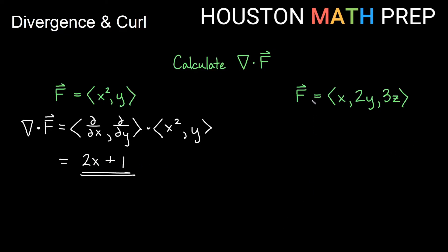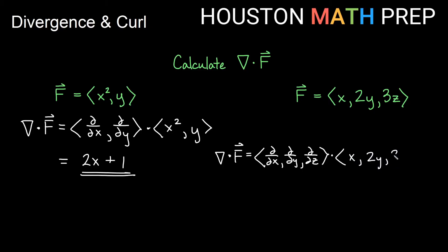For the three-dimensional vector field F = (x, 2y, 3z), del·F is (∂/∂x, ∂/∂y, ∂/∂z)·(x, 2y, 3z). The partial derivative of x with respect to x is 1, partial derivative of 2y with respect to y is 2, and partial derivative of 3z with respect to z is 3. So we get 1 + 2 + 3 = 6. The divergence is 6 everywhere, meaning we have constant positive spreading out at all points. A negative divergence would indicate contraction toward a single point.